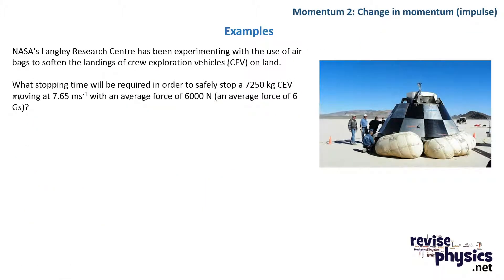Final example, a real-life application here. Researchers at NASA's Langley Center have been experimenting with using airbags to try and cushion the landing of crew vehicles. Now, we're asked what stopping time is needed to stop a 7,250 kilogram vehicle moving with this speed here, with an average force of 6,000 newtons, or about 6 g's. That's about the upper limit of what a human can survive.